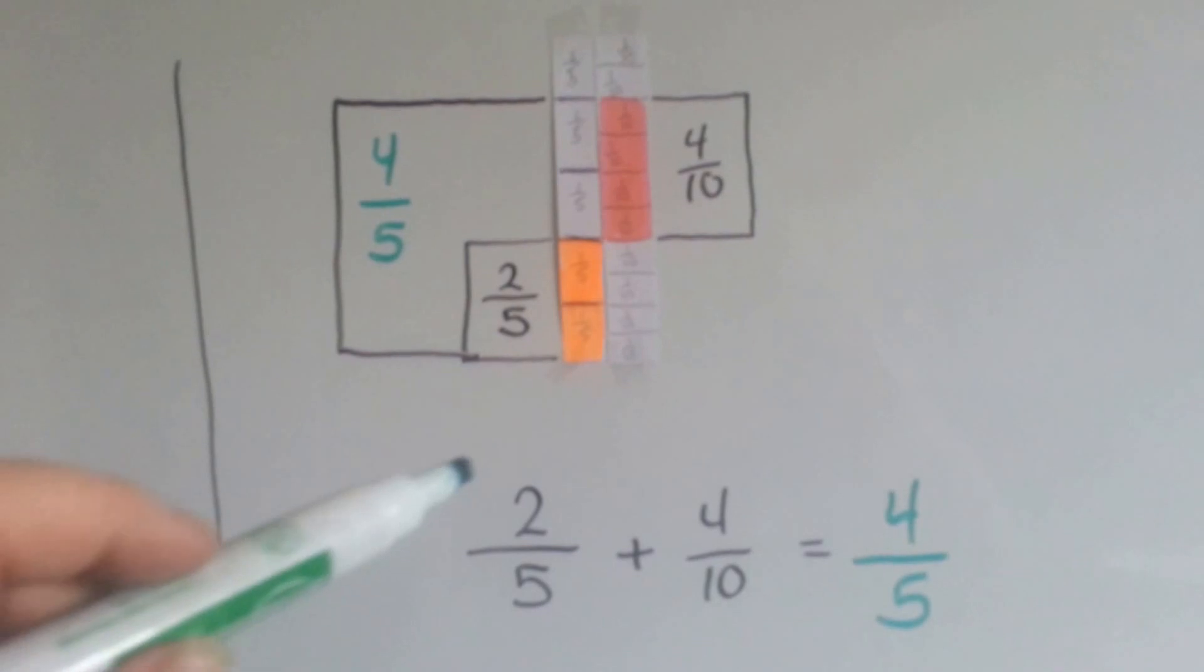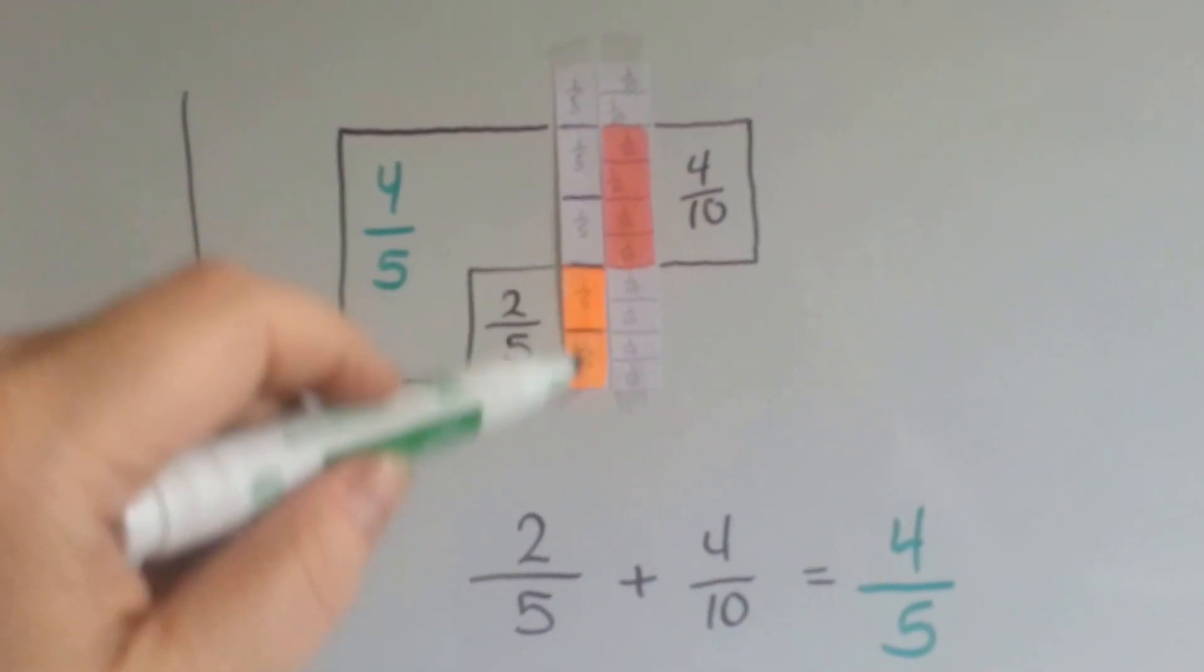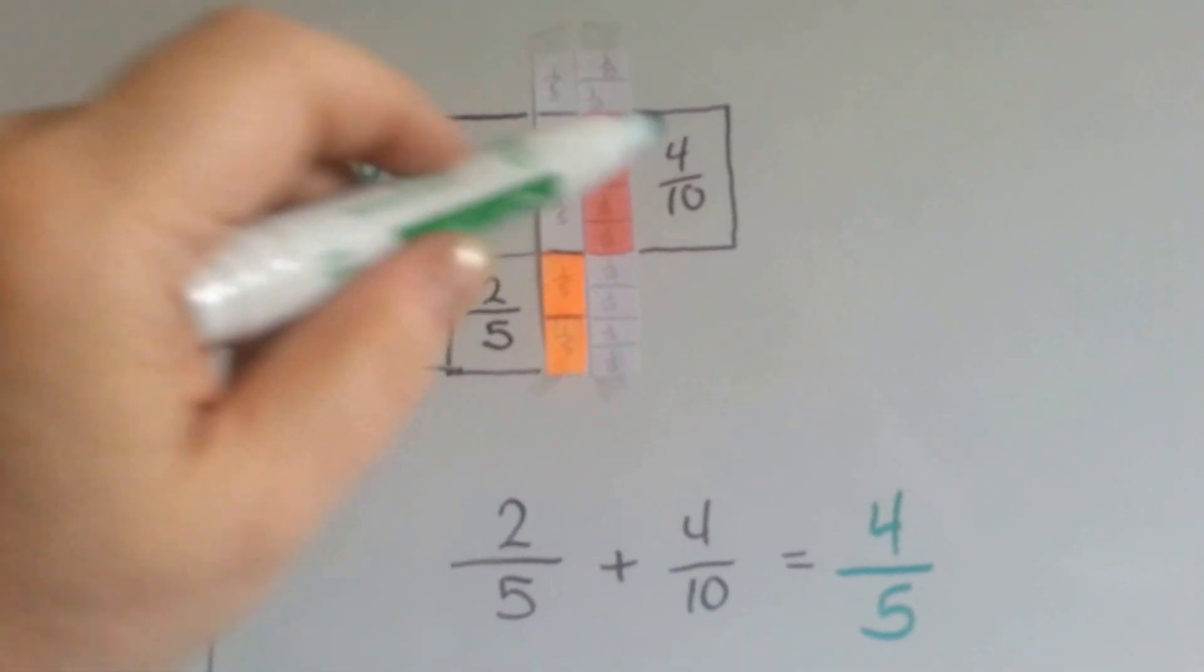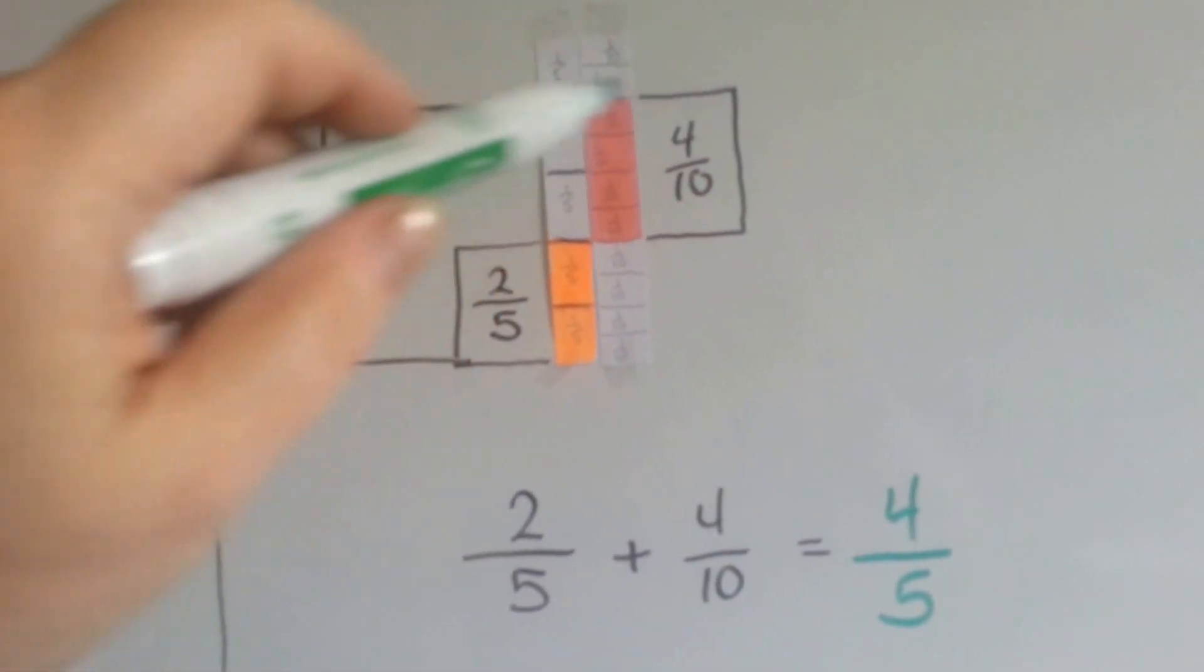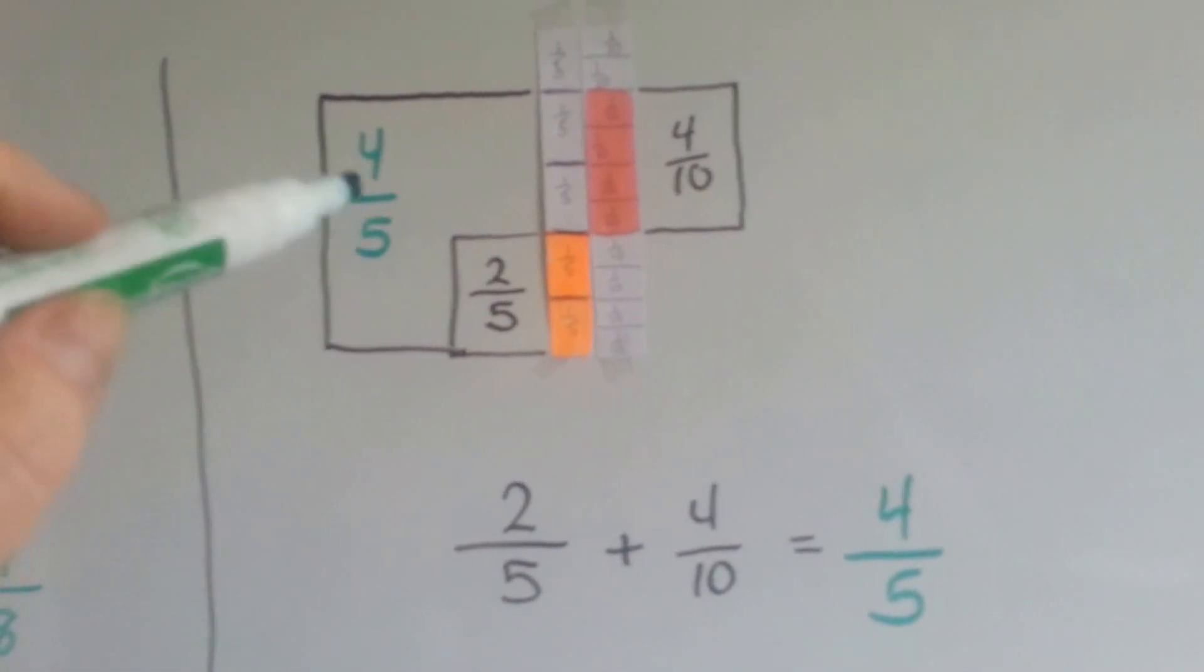For this one, two-fifths plus four-tenths, I lined up the fifths unit and colored in two of them, and then colored in four-tenths. I laid them next to each other and I can see that they line up perfectly so that two-fifths and four-tenths would be four-fifths.